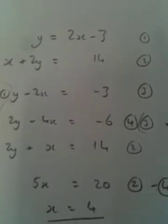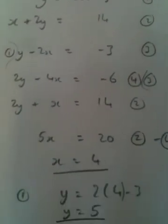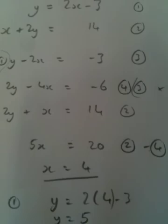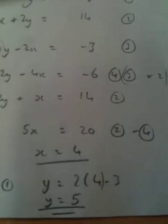To find the value of y, we'll just substitute back into equation 1. So, y is 2 times 4 take away 3. Because it was 2x take 3, and x is 4. So, y would be 5.